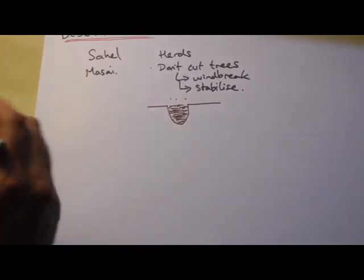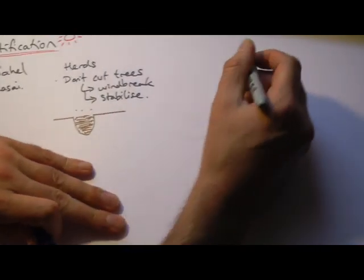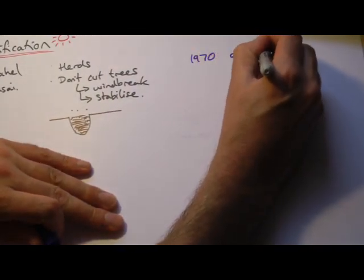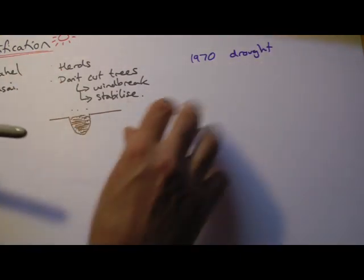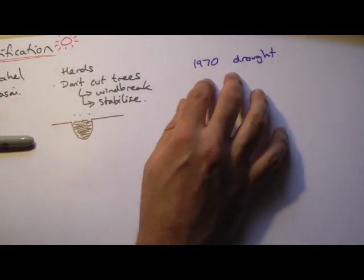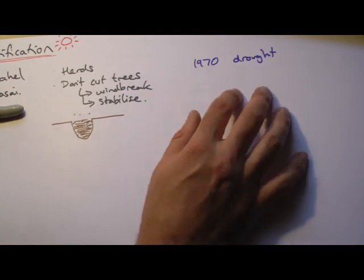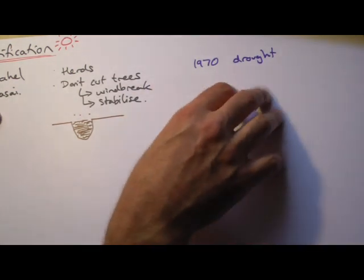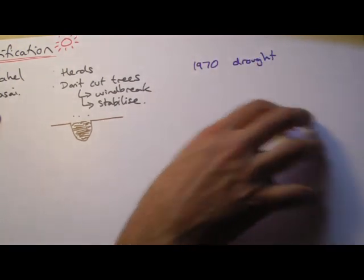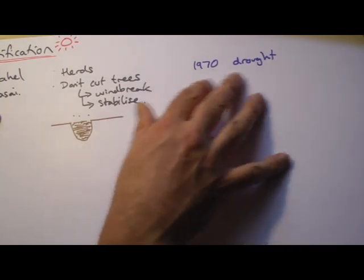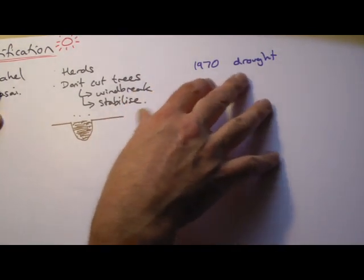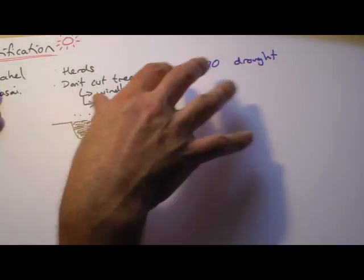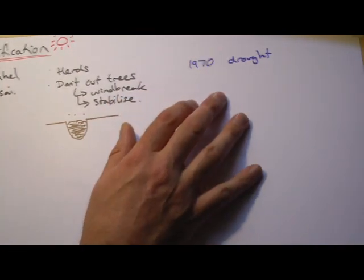The problem started to come in the 1970s and 1980s when there were droughts. Droughts have happened throughout history, but because the population of the earth is increasing every year, every time there's a new drought it's worse and worse because there are now more people relying on the rains to come. Although these conditions have occurred before, it's getting worse and worse, and this is when desertification becomes more and more of a problem.